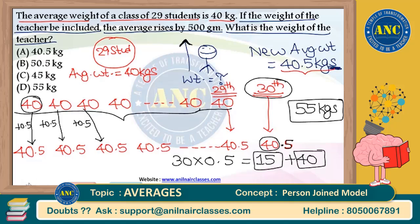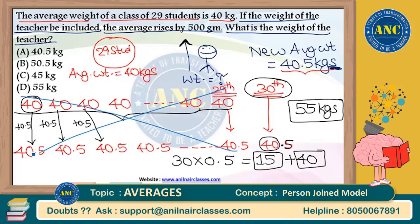You don't need to write all these statements in your examination — I am writing them only for explanation. For every person including herself, the teacher gave 0.5 kg; that is 30 × 0.5 = 15 kg total from the teacher. She herself had another 40 kg. So total weight of the teacher is 40 plus 15 = 55 kg.